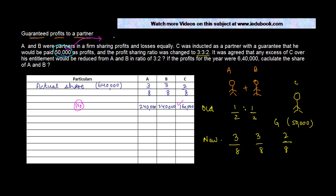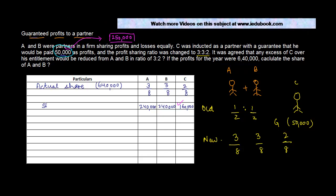Instead of 50,000, the profit was 250,000, so the guaranteed profit to C was 250,000. C has got 160,000 as a share of actual profits. His entitlement in terms of the agreement is 250,000 — this is the revised example. So the shortage is what he was supposed to receive: 250,000, minus what he got, which is 160,000 — that is 90,000.